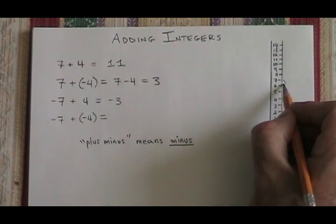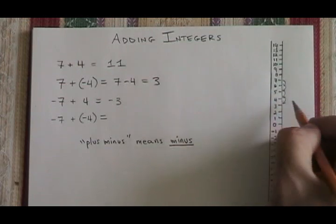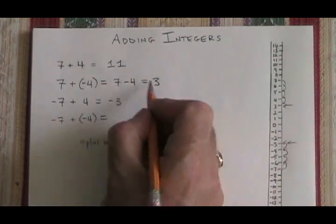We go from 7 down 4 spaces, and we get to 3. That's the answer that we had.